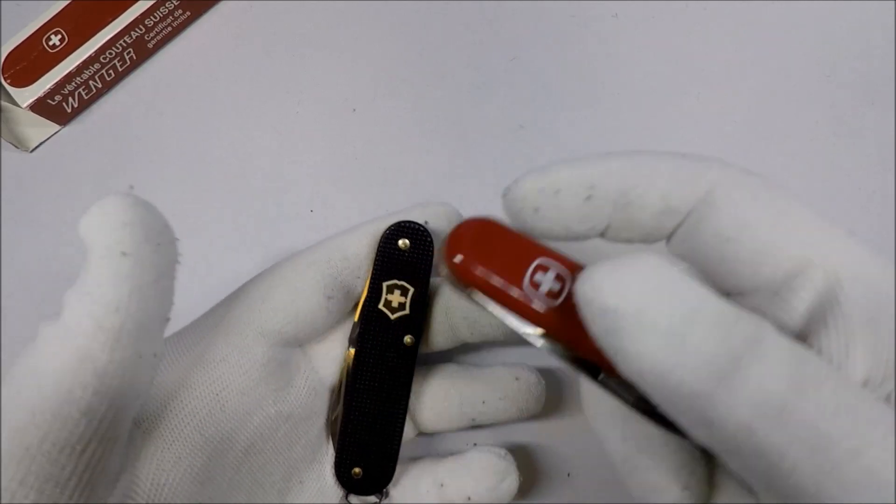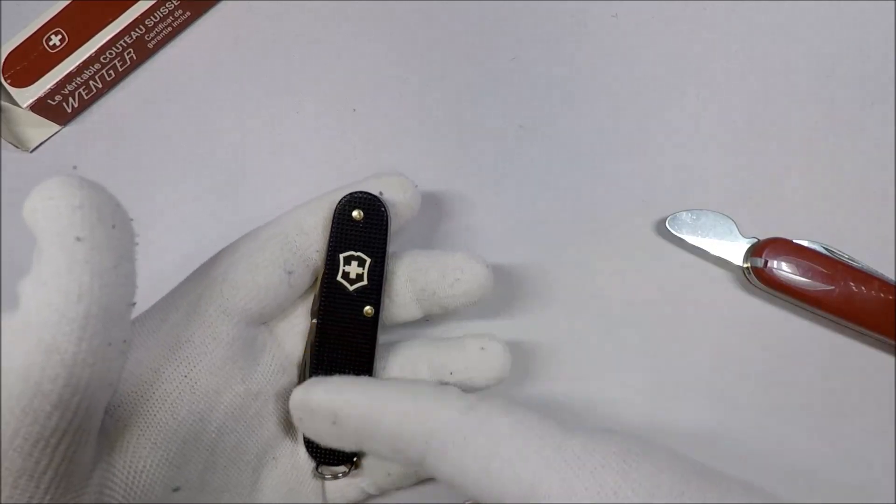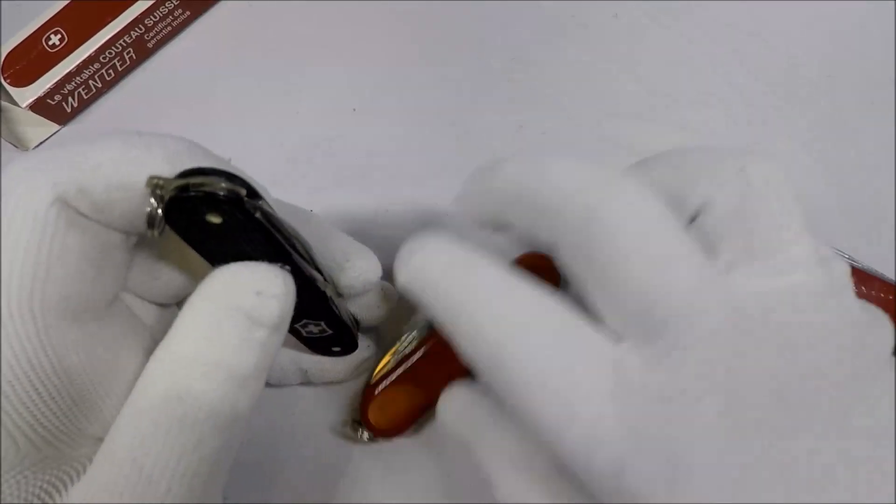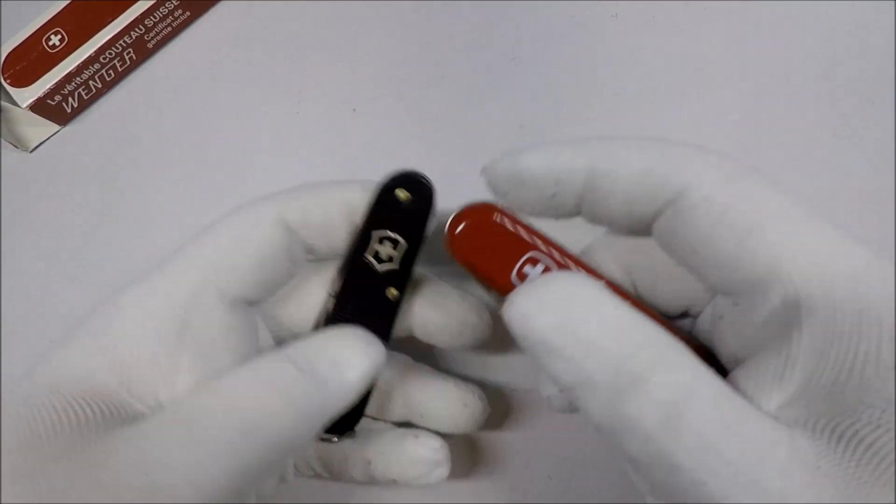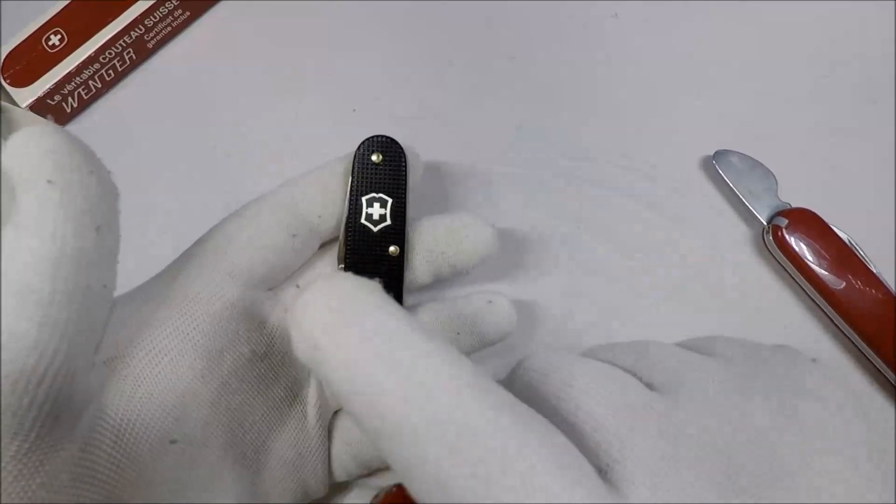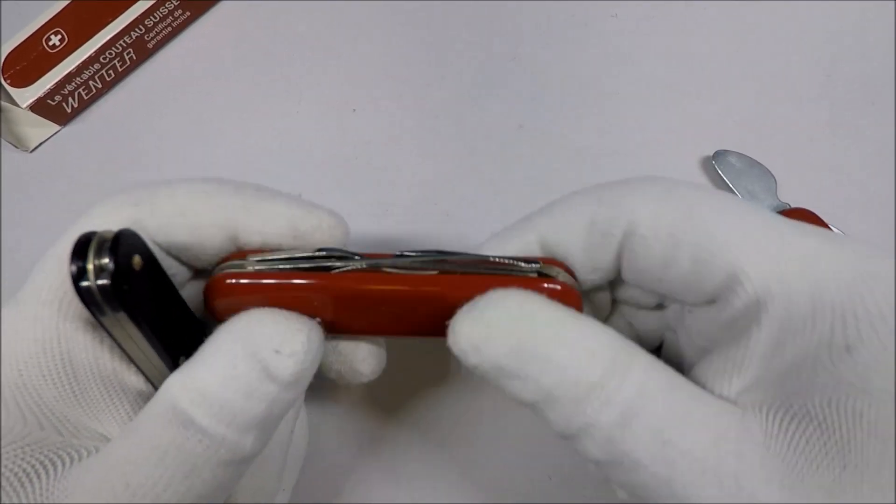But with the Cadet, you end up with the aluminum scales and neither has toothpick or tweezers. So that's not really a big loss. And you end up with aluminum scales, you end up with a much more sturdy knife versus the usual plastic scales.